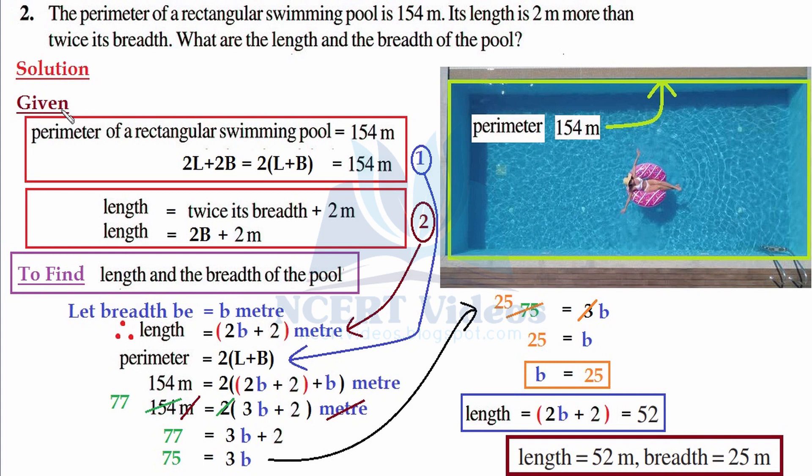So everything became clear to you and now you started finding the solution to this problem. On the paper, first of all, we wrote whatever the given statements are. Number first was: perimeter of a rectangular swimming pool